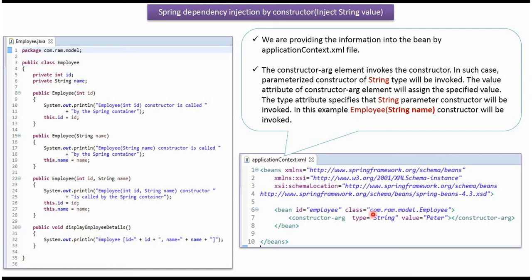This is the Spring configuration file. Here we have specified that the Employee object should be created by the Spring container and the name property of the Employee object should be set as Peter using constructor dependency injection. We have specified the constructor argument with type as string, so the constructor which accepts a string value will be called and name will be set as Peter.